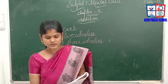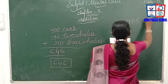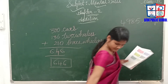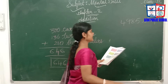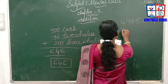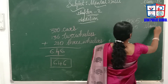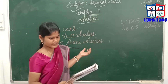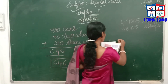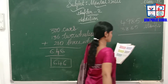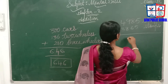Fourth: Rohit had a collection of 4,985 stamps and his brother gave him 3,865 more stamps. How many stamps does he have now? We need to find this by addition.